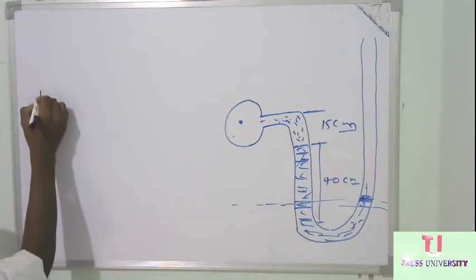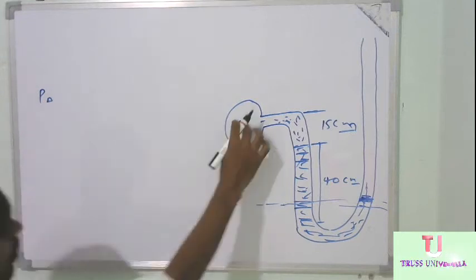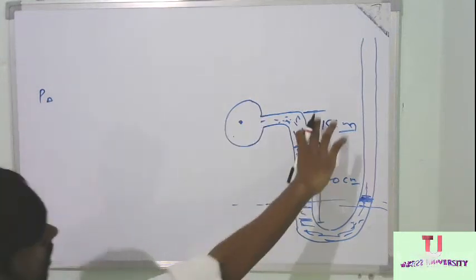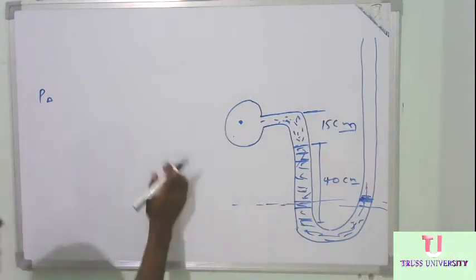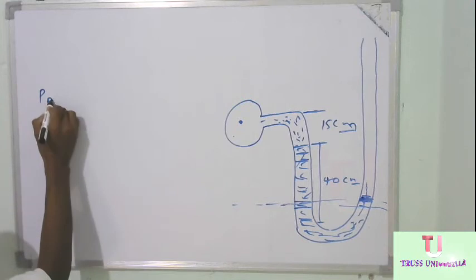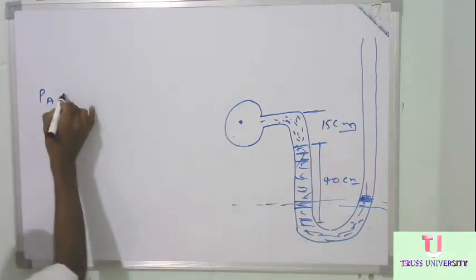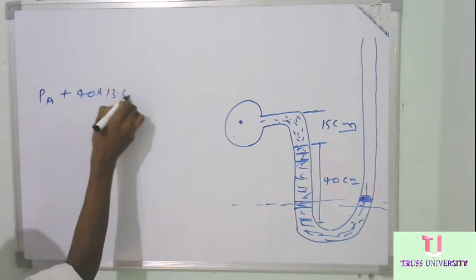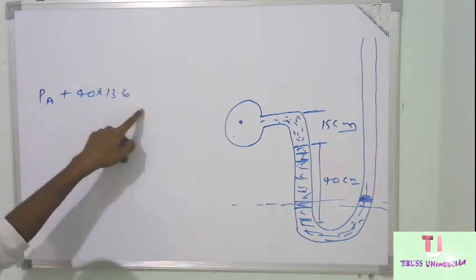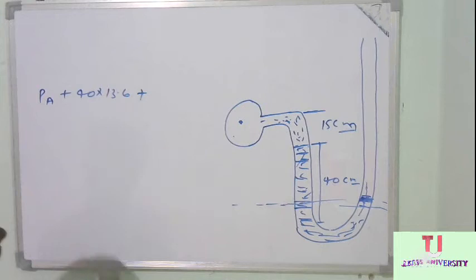So pressure at this point is Pa. Now at this scale, this is 40 cm of Mercury, so plus 40 into 13.6, we are converting this into water column, water head.